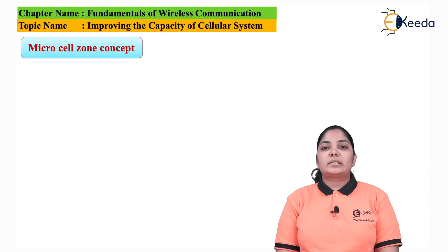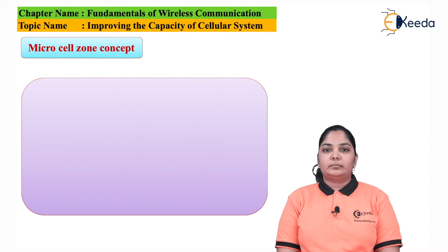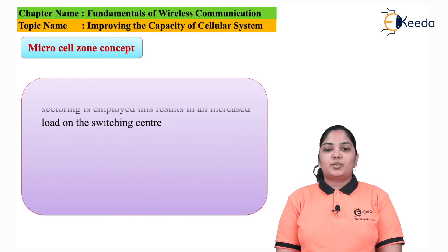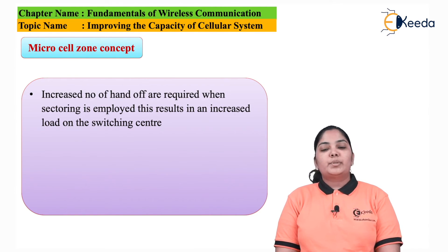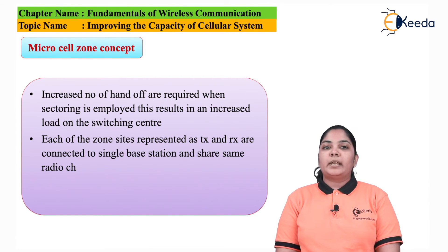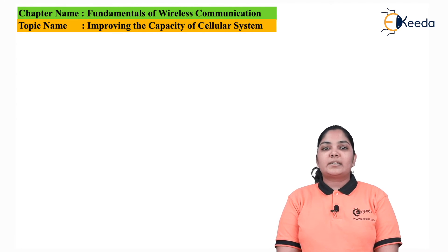Next, we move to the concept of the microcell zone. The increased number of handoffs required when sectoring is employed results in an increased load on the switching center. In the microcell zone concept, handoff does not take place between zones. Each zone site has a transmitter and receiver connected to a single base station, sharing the same radio channel. The zones are connected by coaxial cable, fiber optic cable, or microwave links to the base station. As shown in the diagram, a cell is divided into three zones, each with one transmitter and receiver, all connected to the base station via a zone selector.